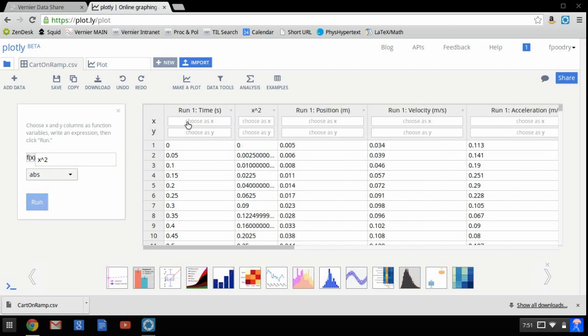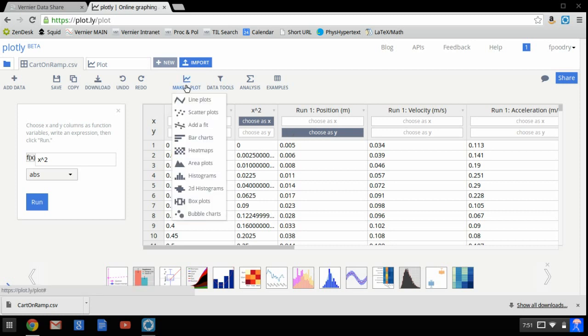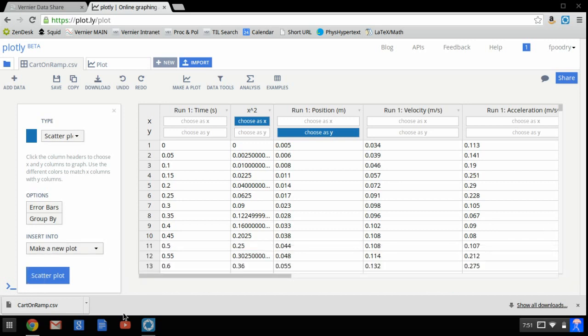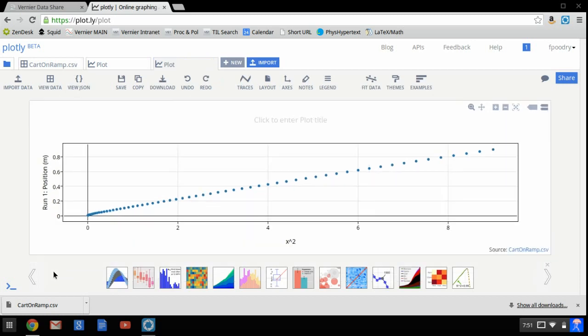Now I can graph position versus time squared by choosing the time squared column as my X and my position again as Y. So this time I'm going to choose Make a Plot. I want a scatter plot. It's going to insert into a new plot. Let me get rid of this stuff on the bottom. And I'm going to click on Scatter Plot. And it looks pretty linear.